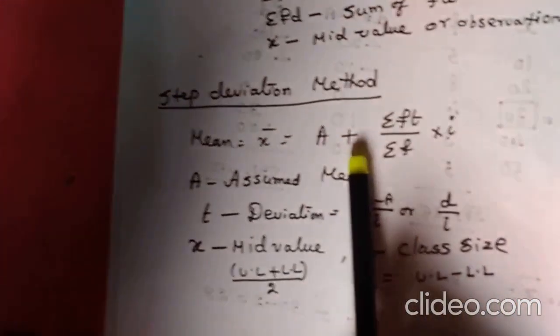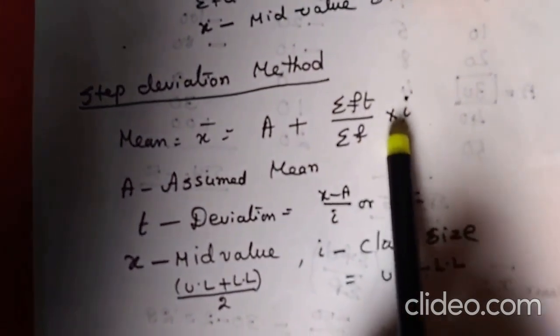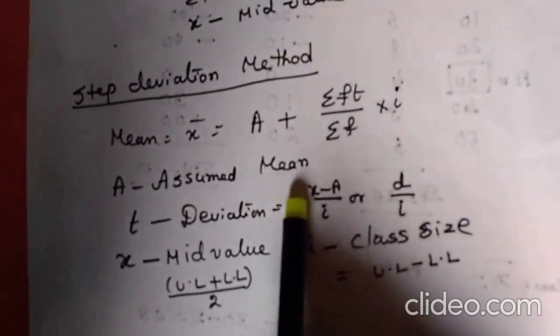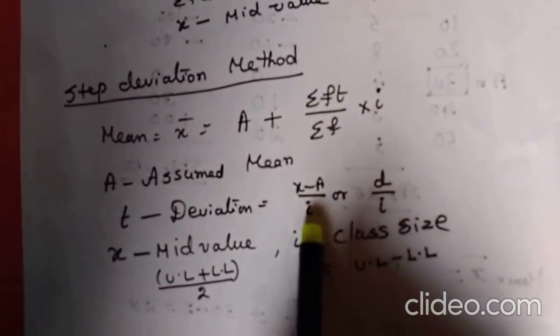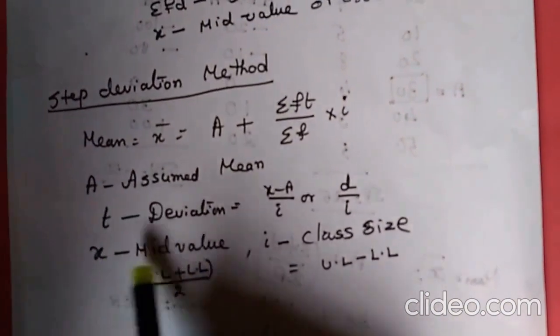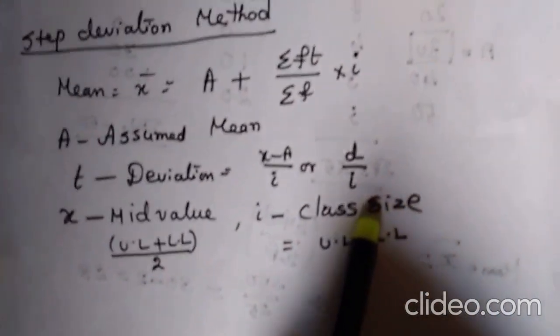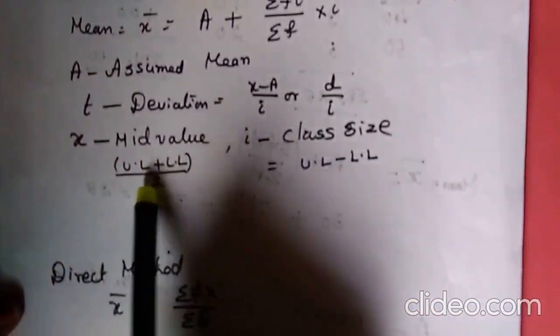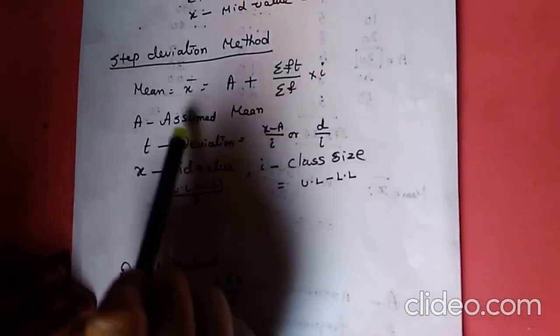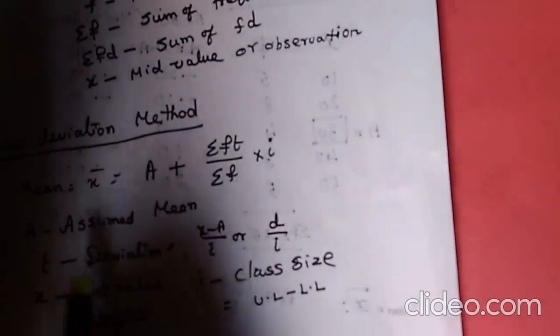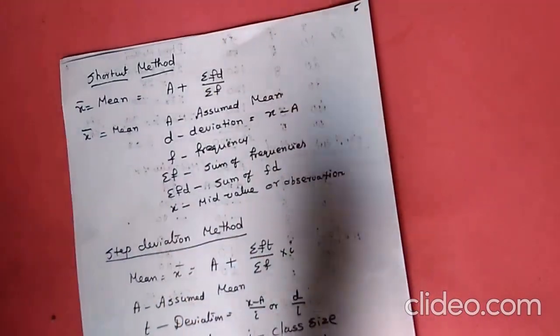The next method is the step deviation method. The formula is x-bar = a + (sigma ft / sigma f) × i. Here a represents the assumed mean. T is also a deviation: T = (x - a) / i, where i represents the class size — upper limit minus lower limit, or the difference between two class marks. This method is called step deviation, the previous is shortcut, and the first is the direct method.